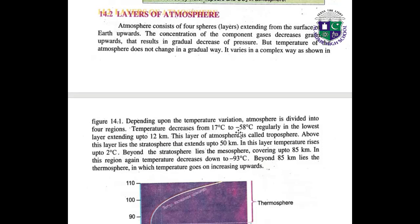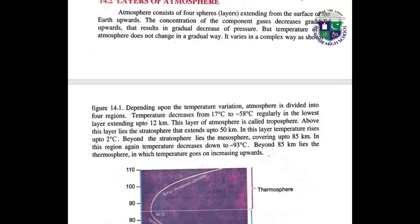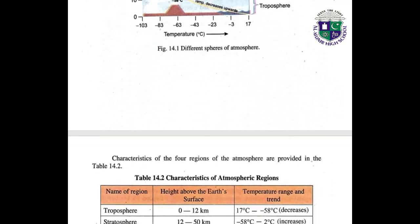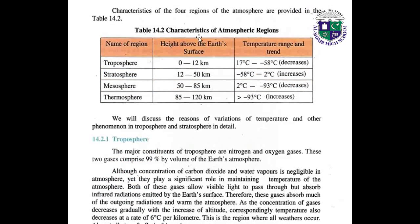Temperature decreases from 17°C to minus 58°C regularly in the lowest layer extending up to 12 kilometers. This layer is called the troposphere. Above it lies the stratosphere, which extends up to 50 kilometers; in this layer temperature rises up to 2°C. Beyond the stratosphere lies the mesosphere, covering up to 85 kilometers. This picture shows the different layers — troposphere, stratosphere, mesosphere, and thermosphere — according to altitude and temperature variations. This table shows the characteristics of atmospheric regions: name, height, and temperature variations.